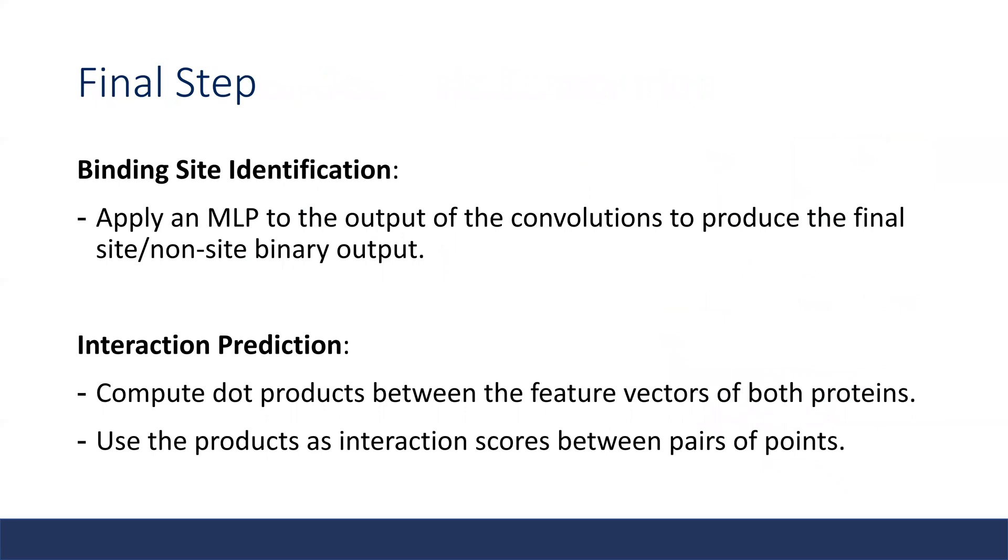Now we've got the feature vector for each point XI, and this feature vector is used to solve the two problems. For the binding site identification problem, we apply an MLP to the output of the convolution, and we can get the binary output which says whether the point is site or non-site.